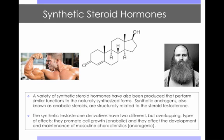Based on the ability of steroid hormones to produce desired effects, a variety of synthetic steroid hormones have also been produced that perform similar functions to the naturally synthesized forms. Synthetic androgens, also known as anabolic steroids, are structurally related to the steroid testosterone. The synthetic testosterone derivatives have two different but overlapping types of effects: they promote cell growth, also known as anabolic effects, and they affect the development and maintenance of masculine characteristics, also known as androgenic effects.